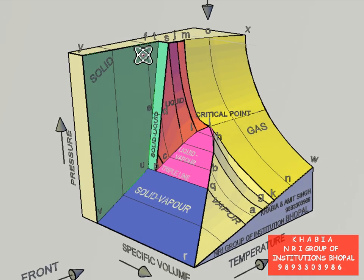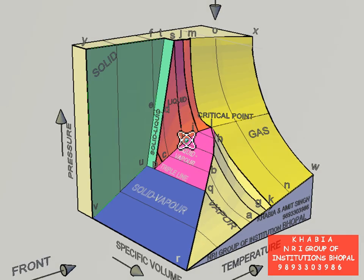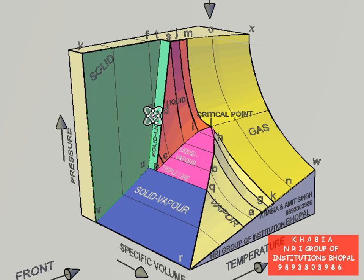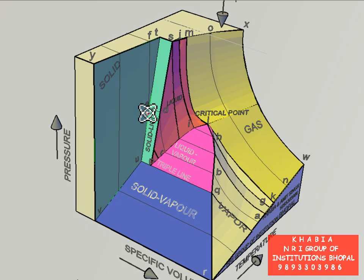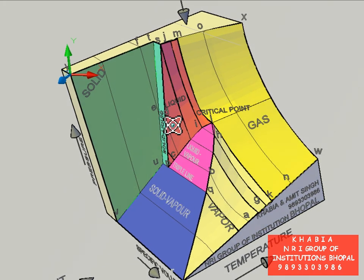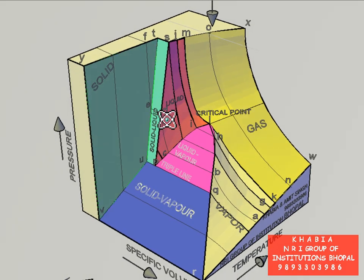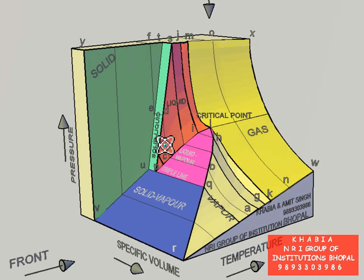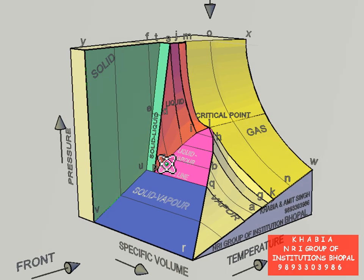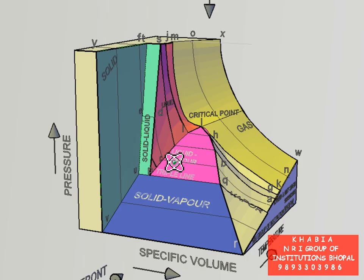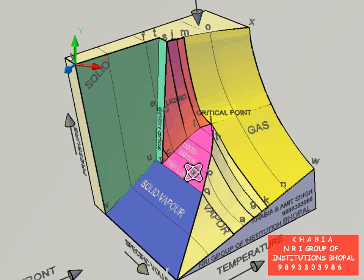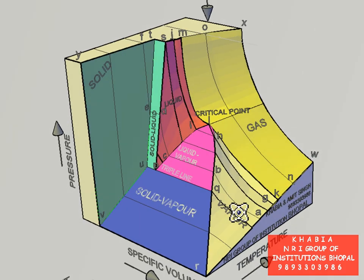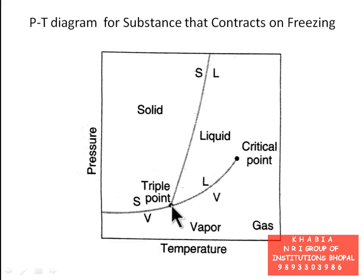At the critical point, saturated liquid and saturated vapor states are identical, and the latent heat of vaporization is zero. Isotherm ABCDEF represents a temperature higher than triple point but lower than critical temperature. At state point F the substance is in solid state; as pressure reduces there is a small increase in specific volume until state E where melting starts. ED is a constant pressure, constant temperature melting process until D, where melting completes. CB is a constant temperature, constant pressure vaporization process from liquid to vapor, and B to A represents the superheated vapor region.